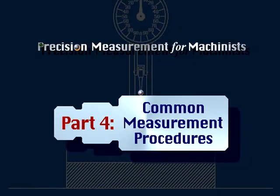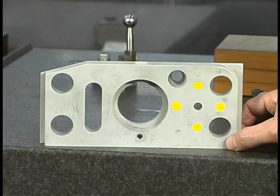Part 4: Common Measurement Procedures. With the grid aligned, the true position of the four holes can be measured.